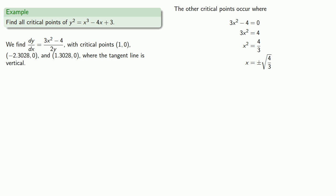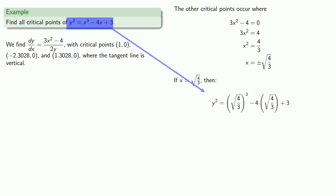We have our x value, and now we want to find the corresponding y value. If x equals the square root of 4 over 3, our equation tells us y squared equals x cubed minus 4x plus 3. When we evaluate the right-hand side, we get negative 0.0792. It's impossible for the square of a real number to be negative, so there is no solution. This means there is no point on the graph where x equals the square root of 4 thirds — the graph skips over this x value entirely.